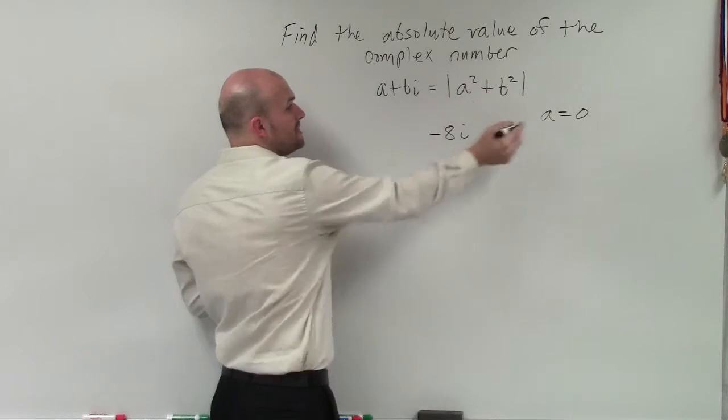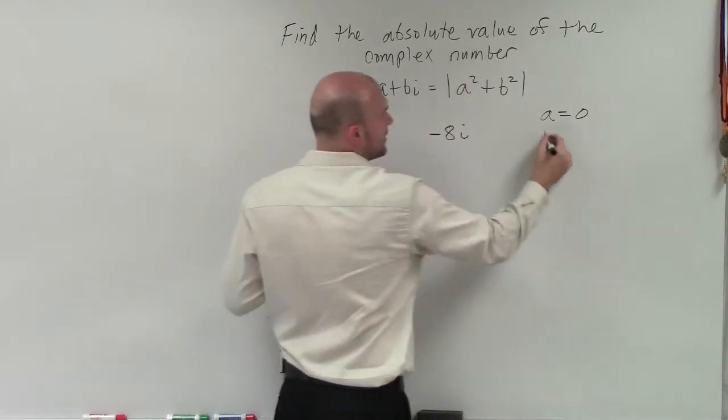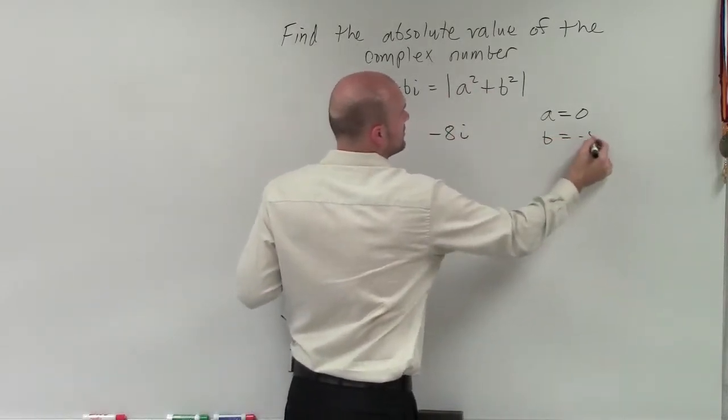So again, by following this formula, we know that a is going to be equal to 0, and b is going to equal negative 8.